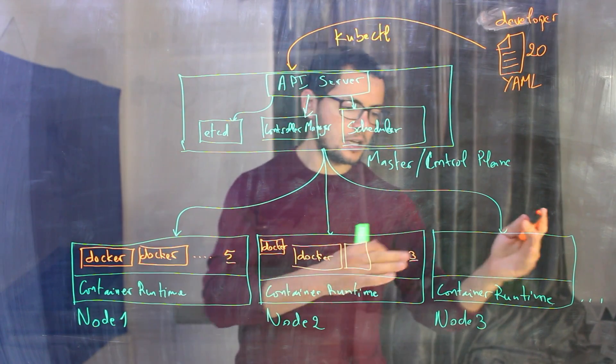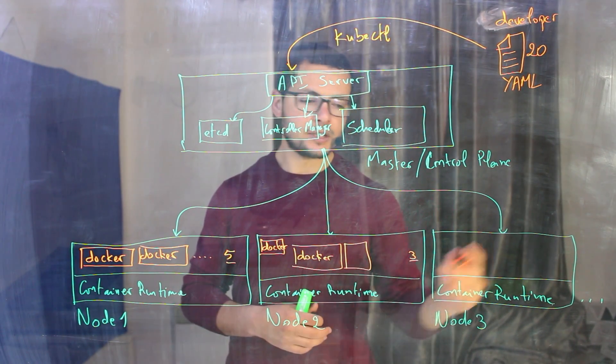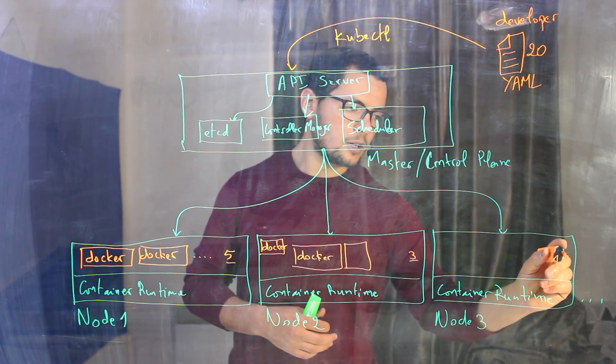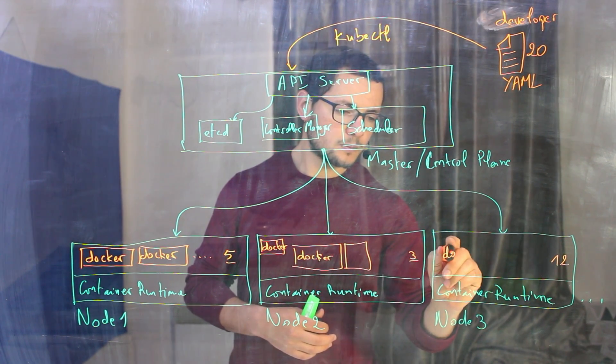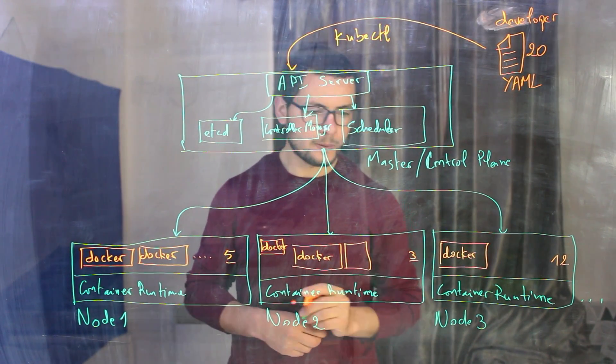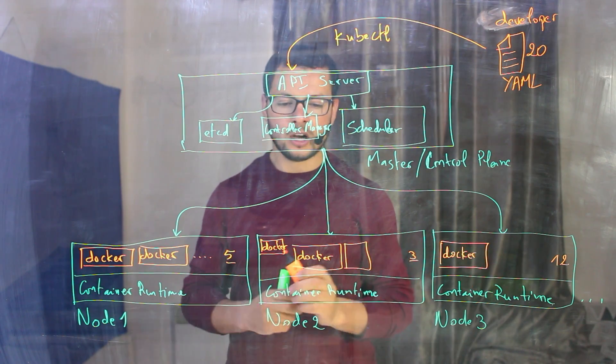So let's say here we'll have three, five, and at the node number three, we have enough space to run more containers. Here maybe you have space to run the remaining 12 containers. So at the end, we'll have this configuration running on our cluster.